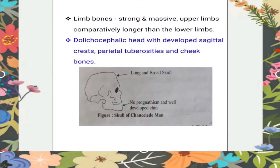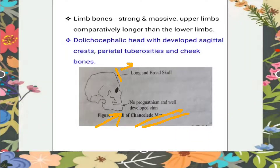In this diagram you will also see that there is no protruding or bulging out of the chin — the chin is very well developed. They have a very broad and long skull, and you will find a very well-developed parietal tuberosities at the parietal bone.